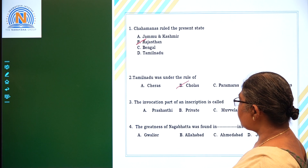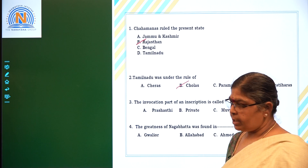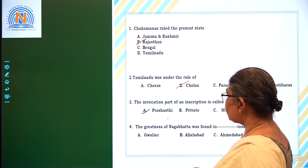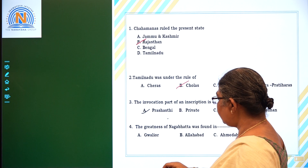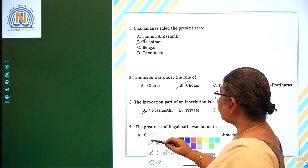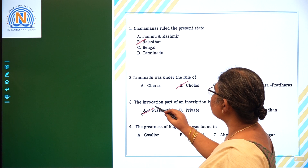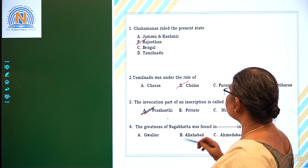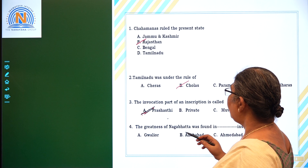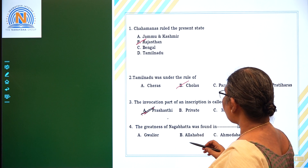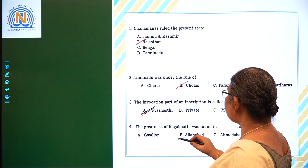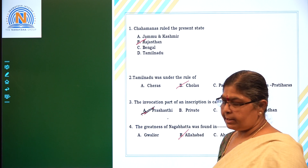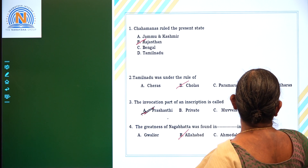The invocation part of an inscription is called the Prashasti. We call that as the Prashasti — Prashasti is the invocation part of the inscription. The greatness of Nagavata was found in the Alhambad inscription.